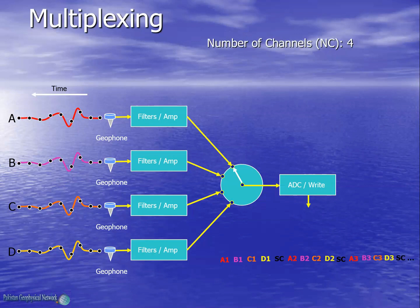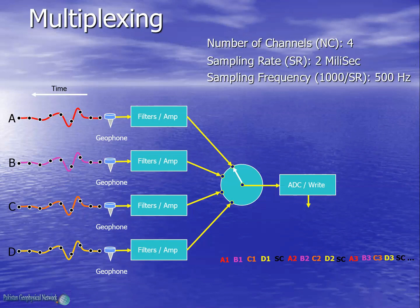In this case the number of channels is 4 and the sampling rate is 2 milliseconds, therefore the sampling frequency is 500 Hz. The skew rate is the sampling rate divided by the number of channels, which is 0.5 milliseconds. It is the time available for digitizing a sample from a single trace. Since the sampling rate is 2 milliseconds, within this interval the seismic recorder has to switch each of the channels to get their samples.